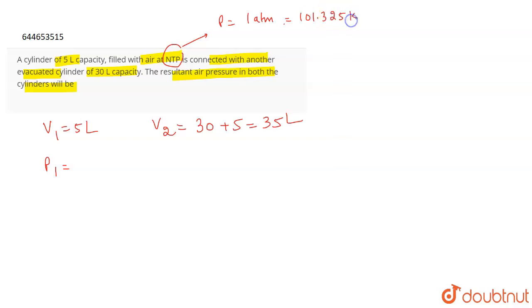101.325 kilopascals, right? Which is equal to 760 mm of Hg, or you can say 76 centimeter of Hg, right?